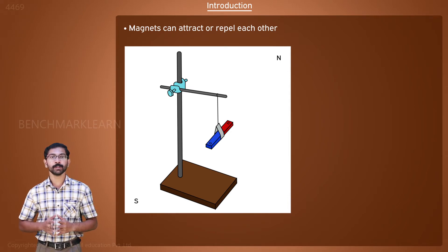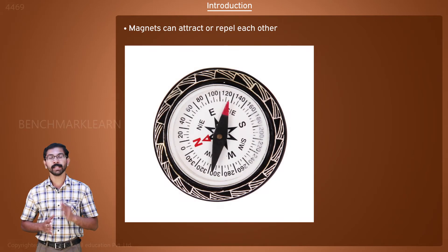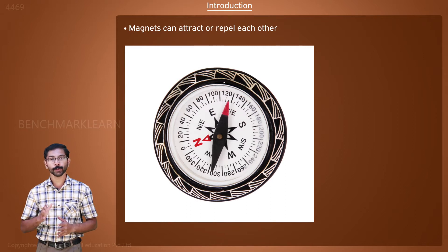These interesting observations led to the study of magnets. The phenomenon caused by a magnet is called magnetism. A magnetic compass is the simplest tool using a magnet. It uses a permanent magnet. Such permanent magnets always behave like a magnet.